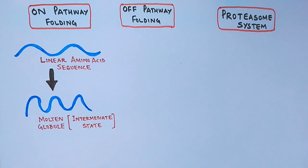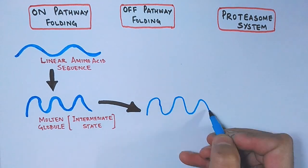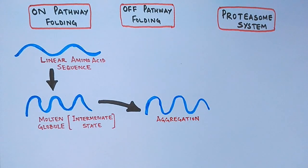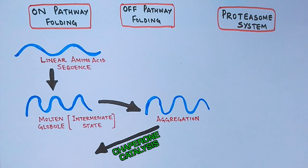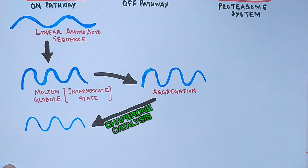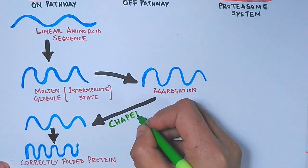But sometimes the intermediate state skips the pathway and goes off the folding pathway which leads to aggregation or misfolding. And it's here when the protein deviates from the path it remains non-functional and unfolded or we can say misfolded. Then the chaperone protein acts on and catalyzes the off pathway protein back to the folding process and eventually we get the correctly folded protein.